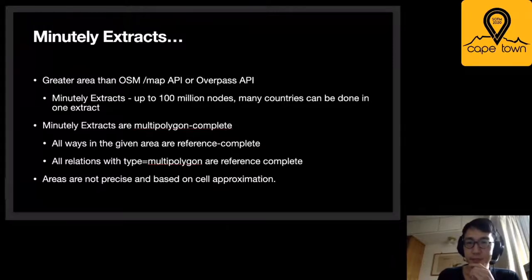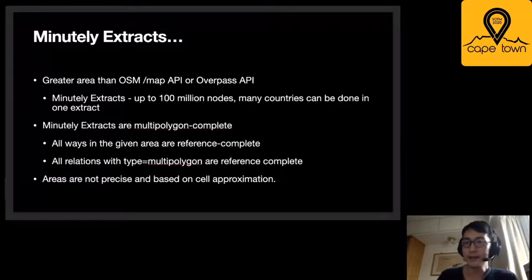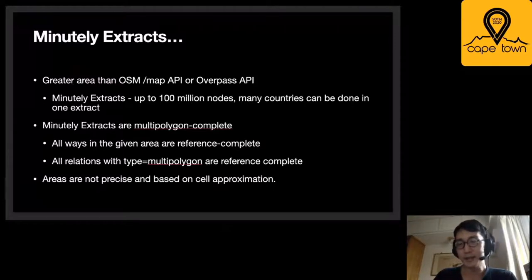In terms of the completeness of the extracts, they are multi-polygon complete, which means ways are reference complete, and any relation that has a tight multi-polygon is going to be reference complete. But for example, a boundary relation is not going to be complete because if you wanted a small area that touches an admin boundary, you could potentially pull in a lot more data. This works the same way that Osmium does. Another caveat is that areas are not precise in Minutely Extracts — the actual things returned are going to be some covering or small expansion of the area you give it.